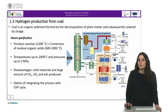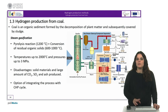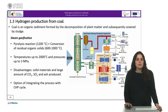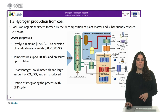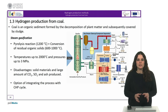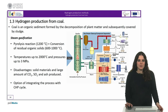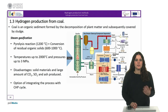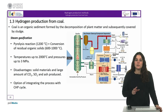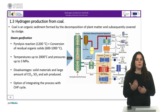The first method shown here is steam gasification, where two consecutive chemical processes take place. The first is a pyrolysis reaction, which is very fast. Pyrolysis consists of the decomposition of a solid fuel by the action of heat — normally around 1,200 degrees Celsius for coal — in the absence of an oxidation medium. Afterwards, there is a slow conversion of residual organic solids where water vapor is required at between 600 and 1,000 degrees Celsius. The conditions normally used are temperatures up to 2,000 degrees Celsius and pressures up to 3 megapascals.